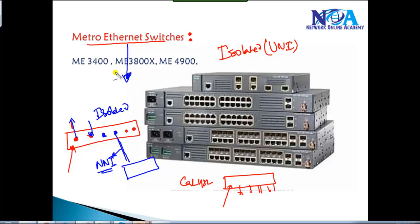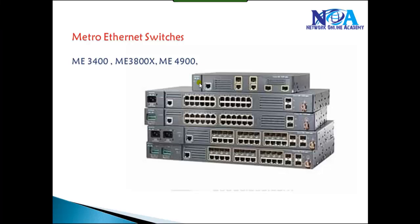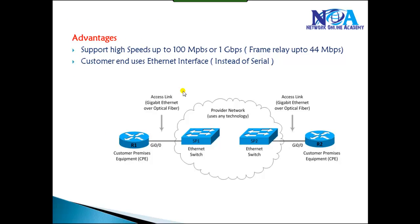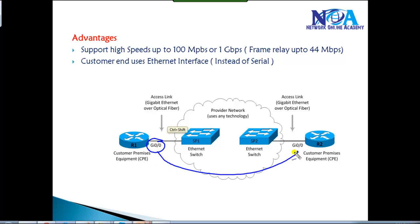This kind of UNI/NNI terminology is used in metro ethernet switches and is not really required at the CCNA level, but just for your information: each and every port is isolated from each other by default, so anything coming on port number one will not go to port number two. This is one of the most common technologies used for providing WAN connections in today's networks, and most WAN connections come over ethernet - that's what we call metro ethernet WAN connections.